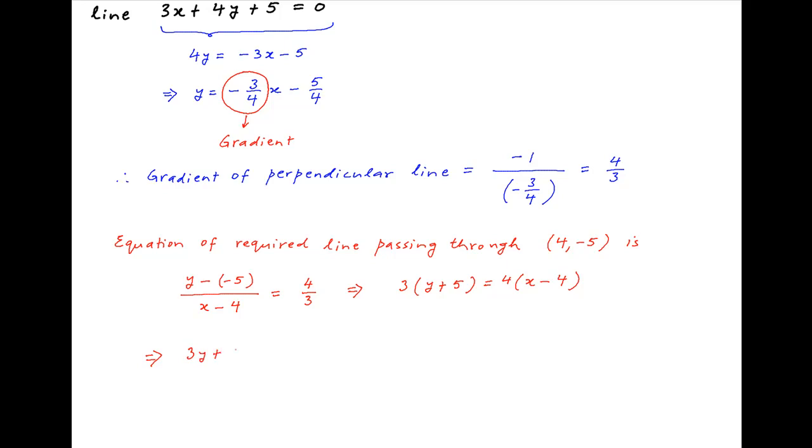3y plus 15 is equal to 4x minus 16, which can be written as 4x minus 3y is equal to 31. And this is the required answer.